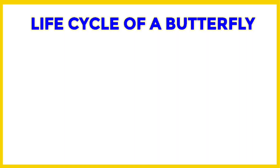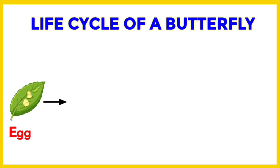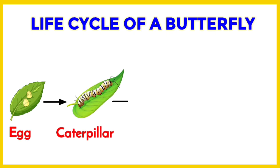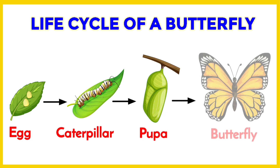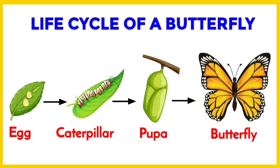So children, now we know about the different stages in the life cycle of a butterfly — from a tiny egg, to a crawling caterpillar, then a resting pupa, and finally a beautiful butterfly. Every stage plays an important role in its growth. The butterfly teaches us that change is natural, and every stage of life is special in its own way.